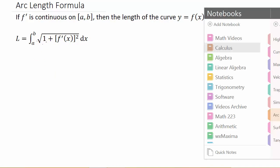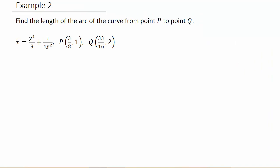Let's look at the second example. Find the length of the arc of the curve from point P to point Q. They give us x = y⁴/8 + 1/(4y²). We want to go from the point (3/8, 1) to (33/16, 2). You can see that this curve is solved for x, so we have our function in terms of y. So I'm going to take the derivative of x with respect to y.